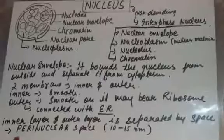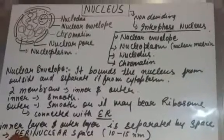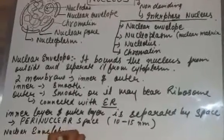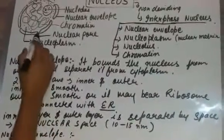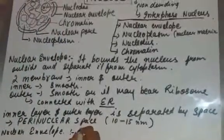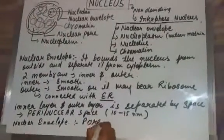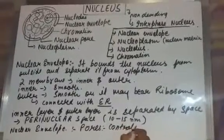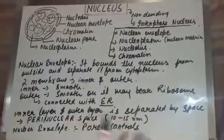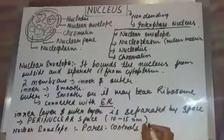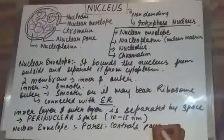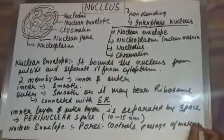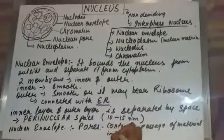The space between the inner and outer membranes is called the perinuclear space. Its width is 10 to 15 nanometres. There are pores present on the nuclear envelope, which allow passage of material inside and outside the nucleus.